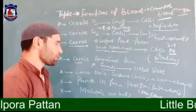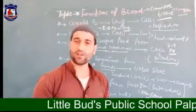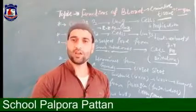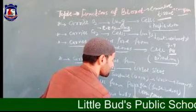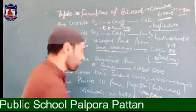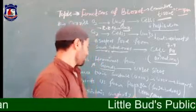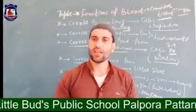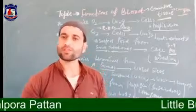Blood also protects us from pathogens and foreign bodies. When pathogens or foreign bodies enter our body through water, food, or by inhaling, the WBCs — white blood cells present in the blood — kill the pathogens by the process of phagocytosis. So we can say that blood protects us from a number of infections and pathogens, as WBCs kill these pathogens by phagocytosis.